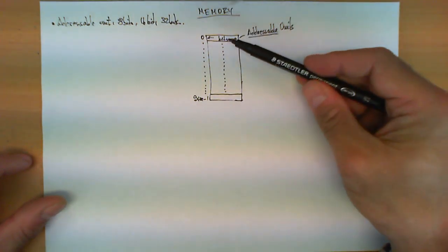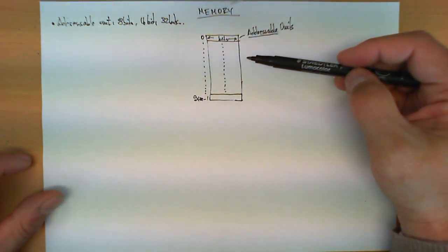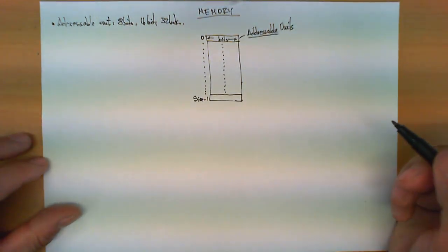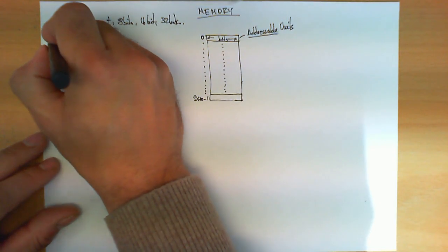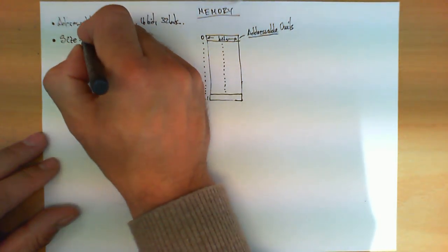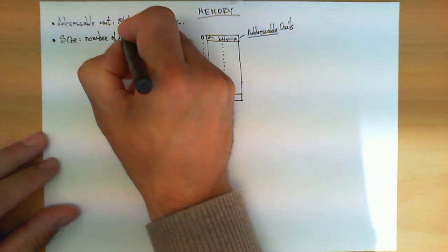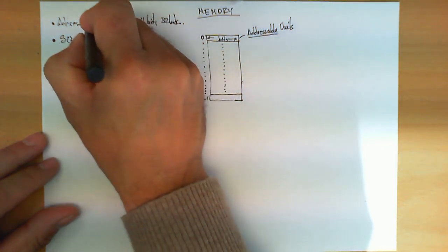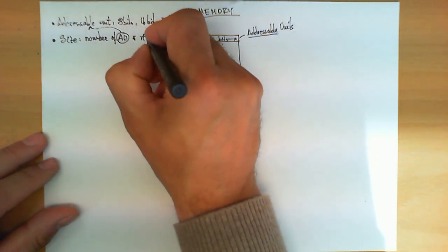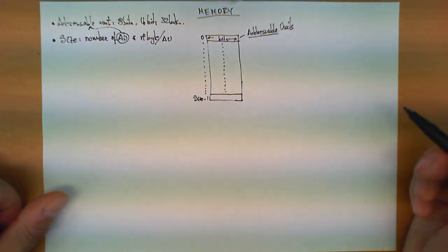In other words, the basic manipulation of data of this circuit is always the same. It stores data, but the way it is organized internally depends on the size of this addressable unit. The total size of the memory can be obtained multiplying the number of addressable units, let's call it AUs, times the number of bytes per addressable unit.